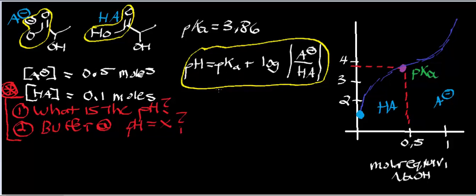So the pH is not going to be equal to the pKa when the conjugate acid and conjugate base concentrations are not equal. In this problem, we're going to have a simple monoprotic acid-base buffer, and it has a pKa of 3.86. This particular molecule on the right is called lactic acid.